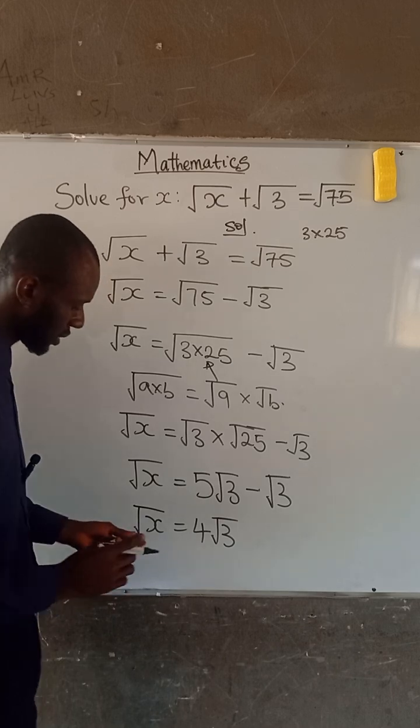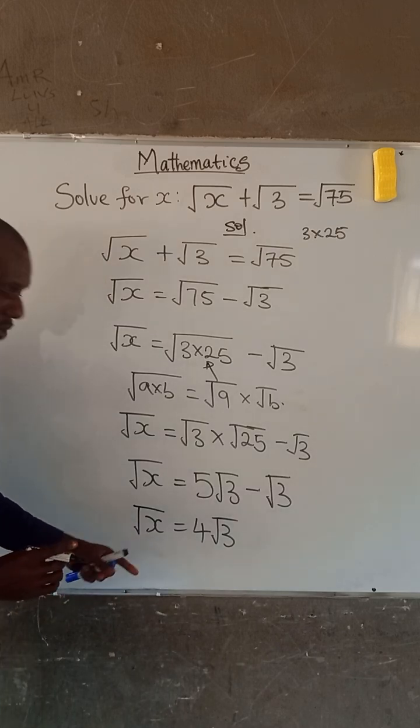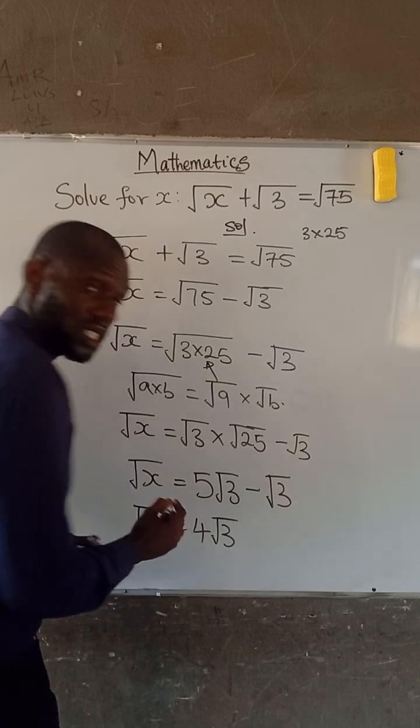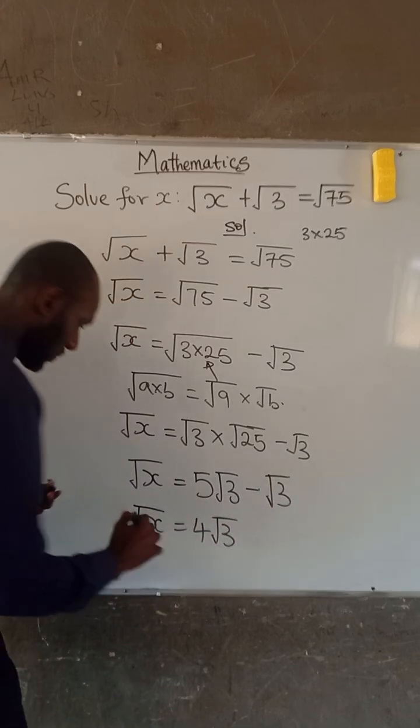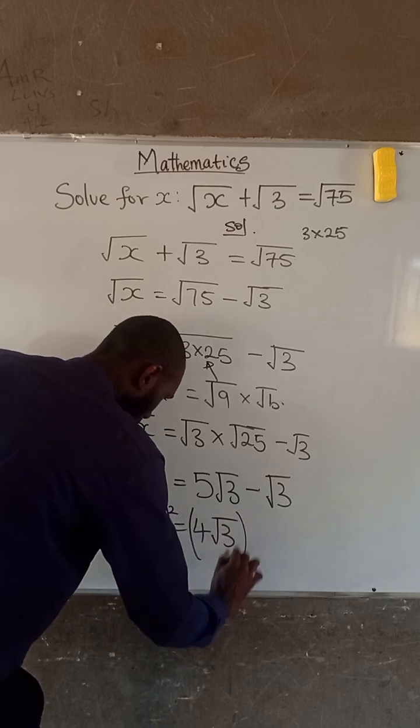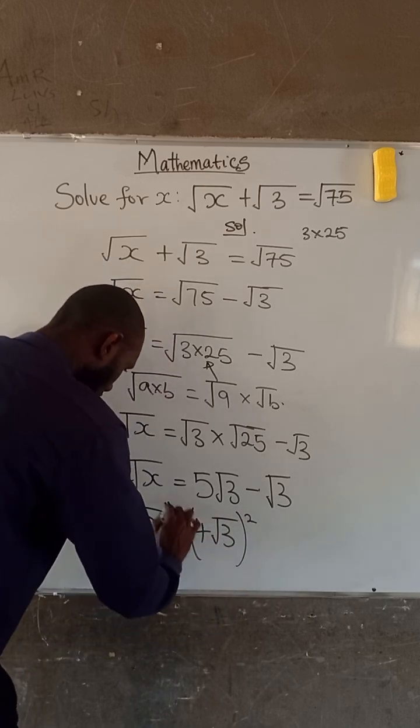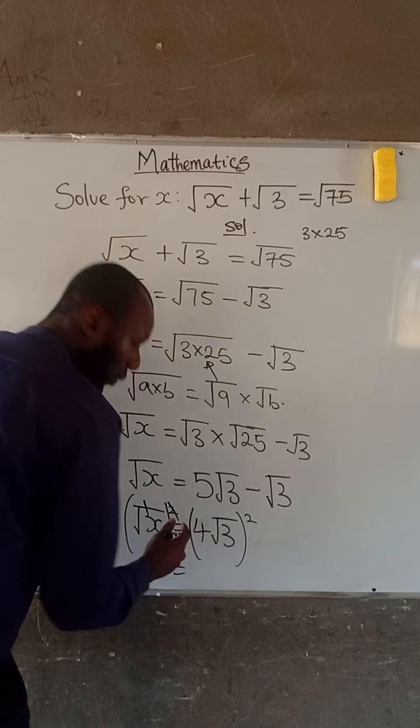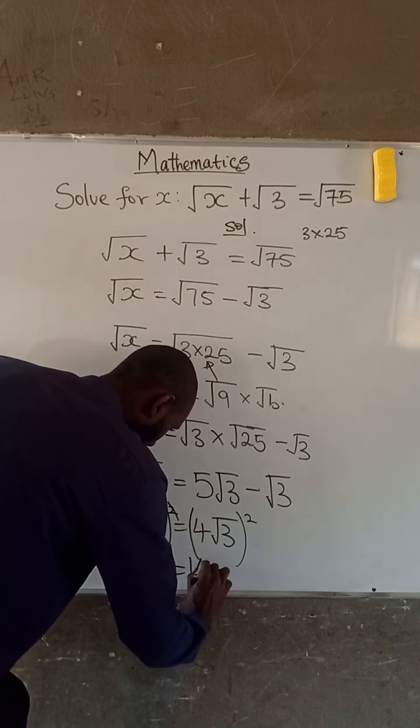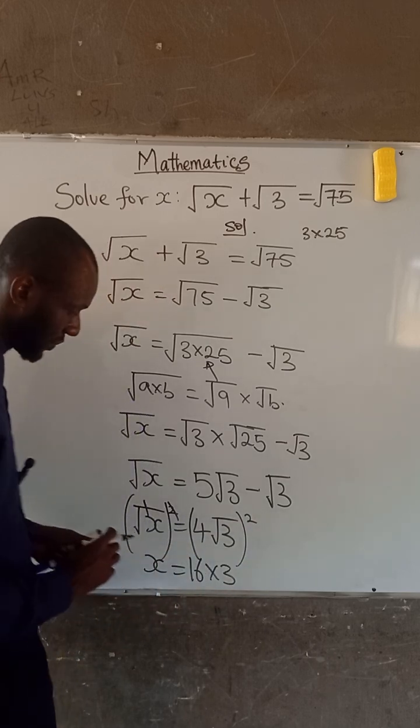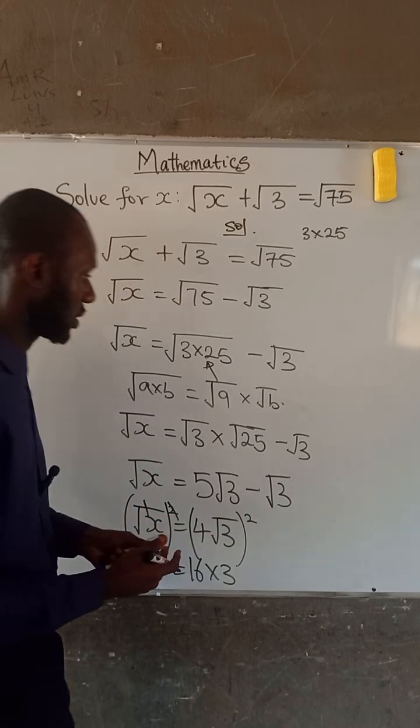Now we don't want a variable to have a root, so we have to simplify this to have just x. To achieve that, we square both sides. If we square both sides, the square cancels out the root here. So we have x equal to 4 squared is 16 times 3. Because the square takes out the root of 3. So 16 times 3 is 48.